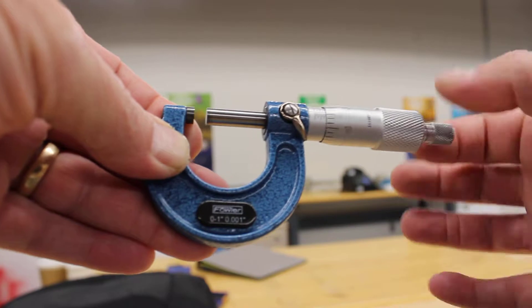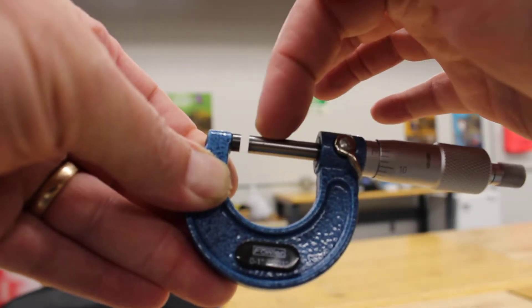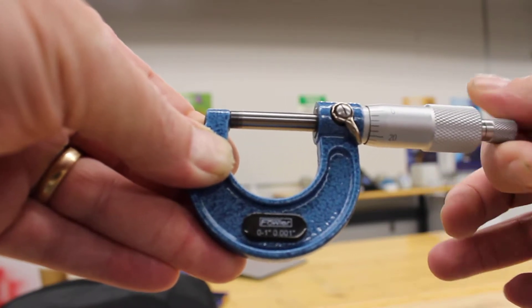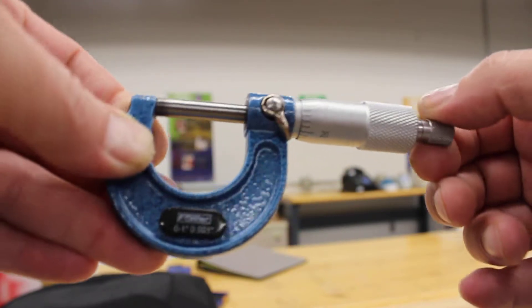The way it works is as you twist back here on the thimble, you can see this part right here, which is called the spindle. It moves in and out until it closes up. You never want to jam it tight shut, and you're going to check to see that it's on zero.